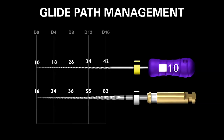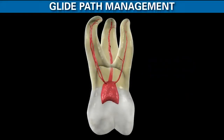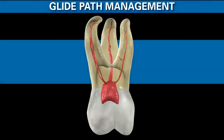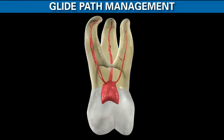Back to our distal buccal root — now that we know what the glide path is and what the tools are, the next question is: do we take the files to length immediately, or is it wiser to work perhaps two-thirds of the canal first, get pre-enlargement done, and improve access to the canal's apical one-third? In general, in shorter, wider, and straighter canals, we have permission to take our small hand file to length immediately. But in longer, more narrow, and more curved canals, it's wise not to negotiate the full length at one time.